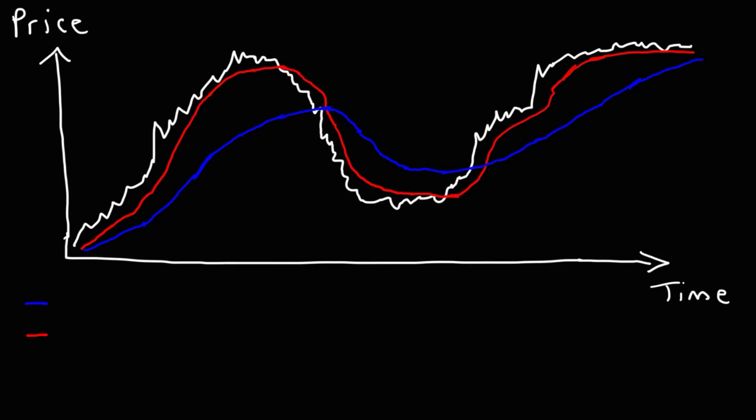Now here's a similar price chart, but this time we have two simple moving averages. The red line is the SMA 20 and the blue line is the SMA 50. Notice that the SMA 20 follows the price chart more closely than the SMA 50 — it reacts faster to price changes, so it's more volatile. The SMA 50 reacts slower to price changes, so it's less volatile and has more lag.